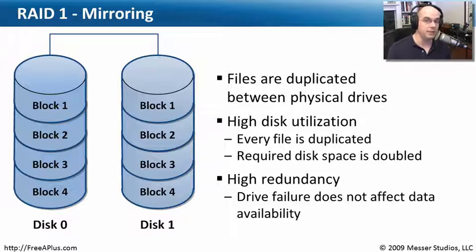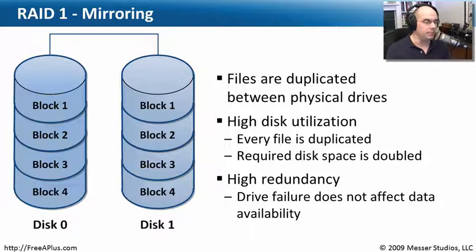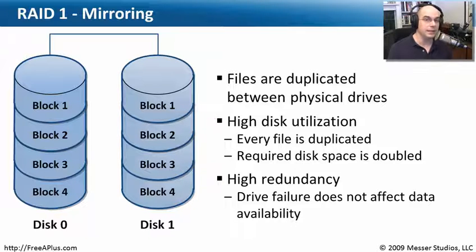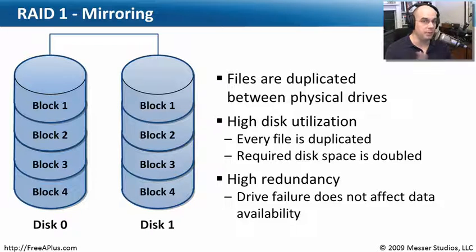The idea is that you'll get a message on the server screen, or a page, alerting you to a disk problem so you can pop out the bad disk, slide a new one in, and the RAID array automatically rebuilds so you've got a mirror of everything again. Obviously, if you lose one disk you're fine, but if you lose two disks in a two-disk mirror you have a problem. You want to replace a failed drive as soon as possible to maintain the redundancy and uptime that RAID 1 provides.